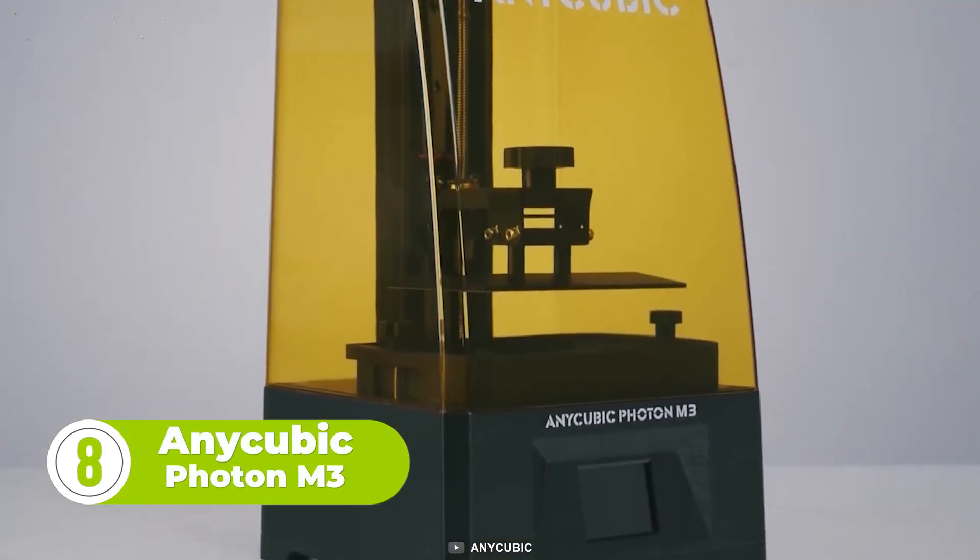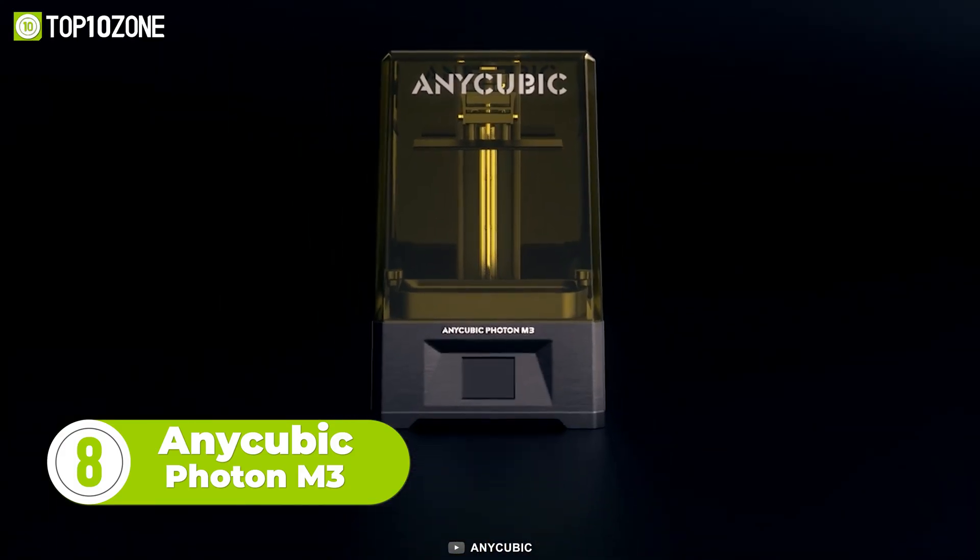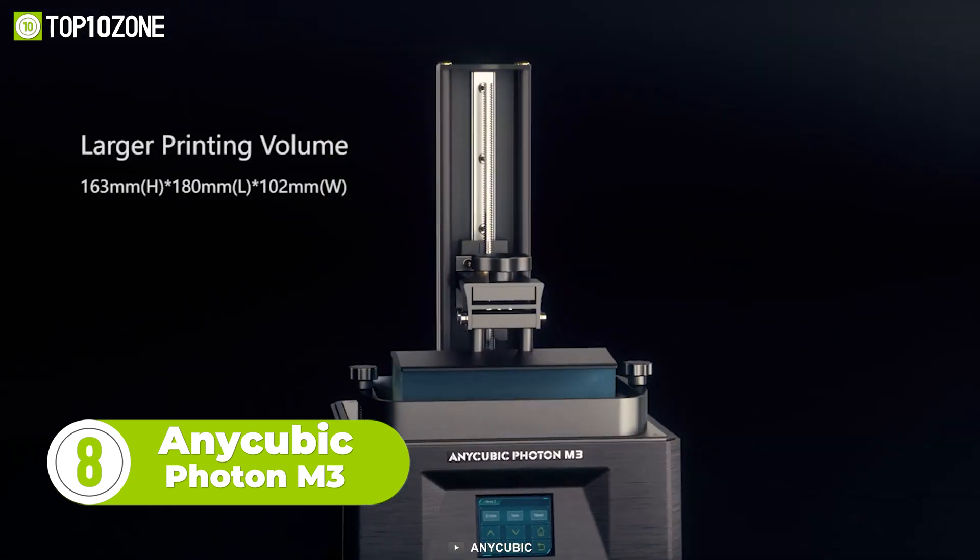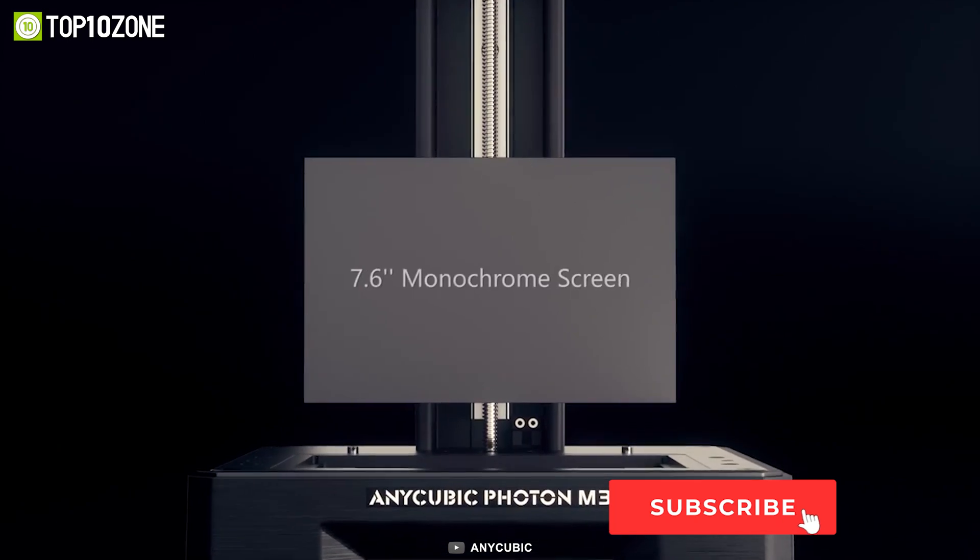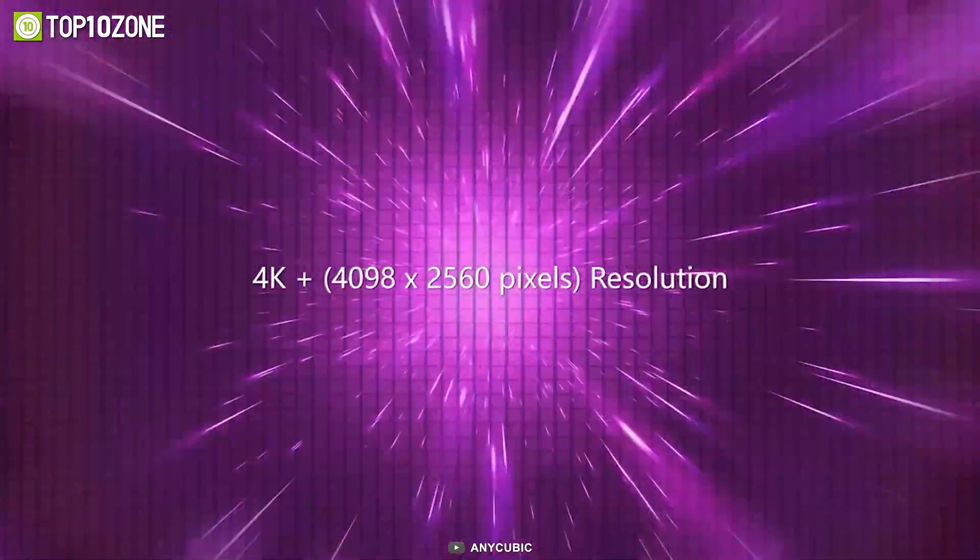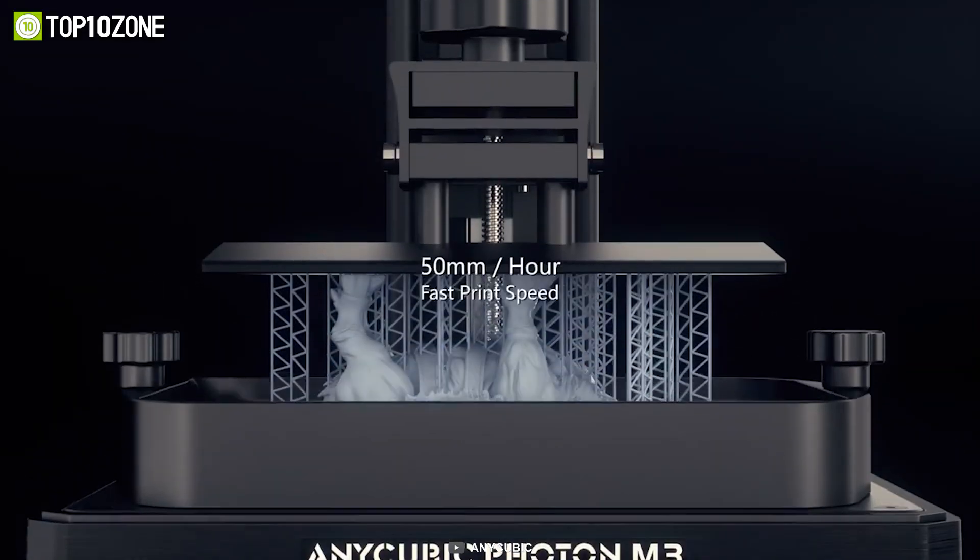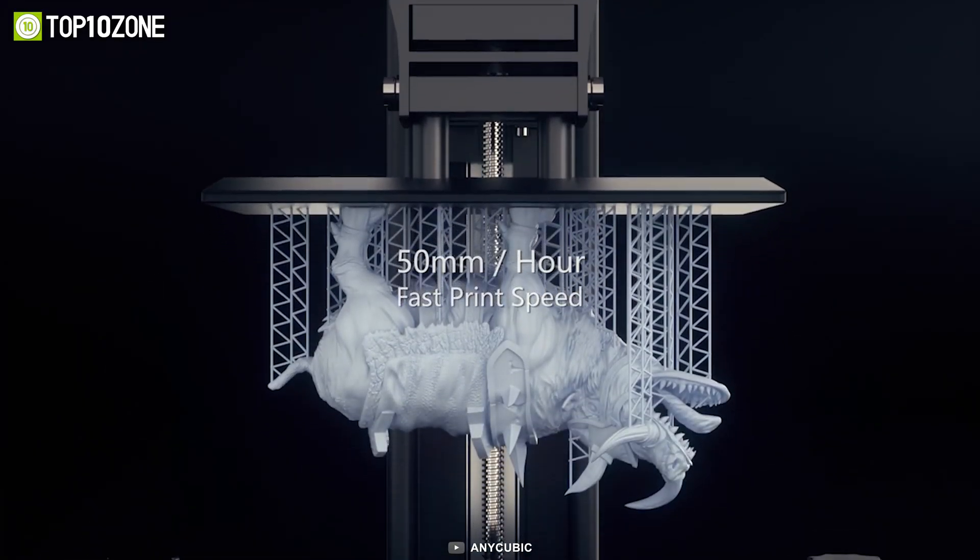Another is the Anycubic Photon M3, which is an entry-level machine with excellent quality to satisfy your needs. This printer has a user-friendly interface and a large 7.6-inch LCD monochrome screen with a 4K resolution to unleash your imagination. It has a large printing volume and can print 50mm per hour.